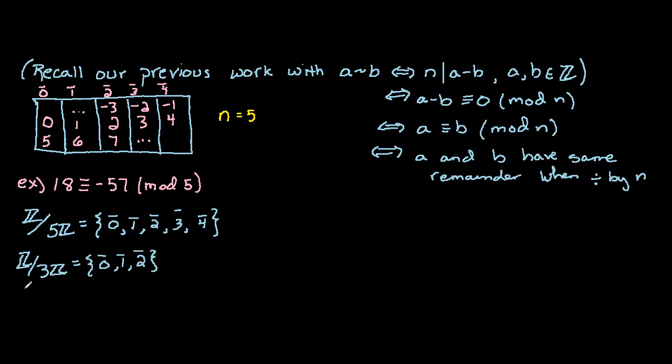We could look at, in general, the integers mod n, and that would be the set of equivalence classes 0, 1, 2 all the way up to n minus 1.